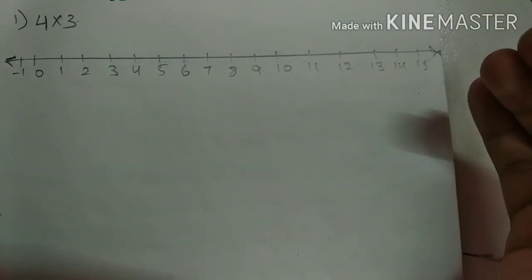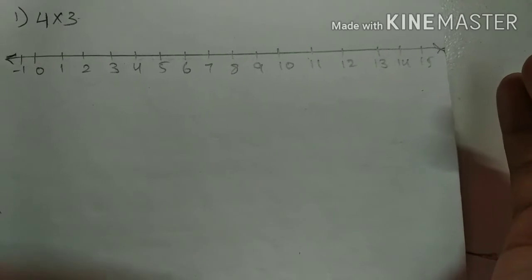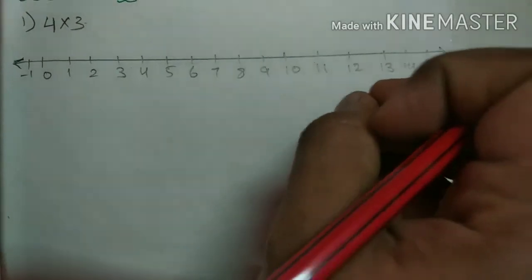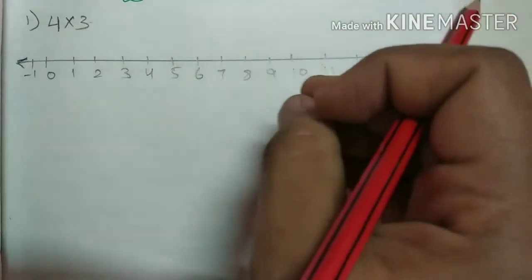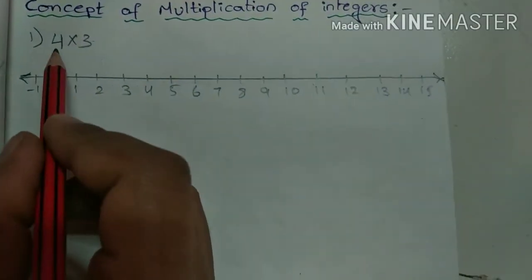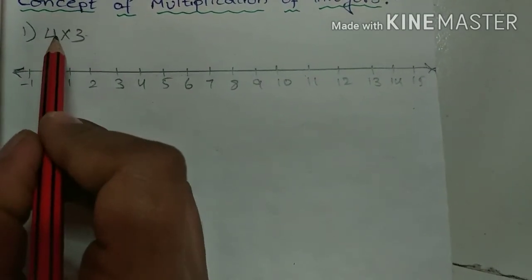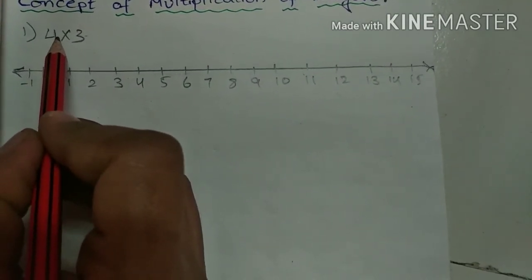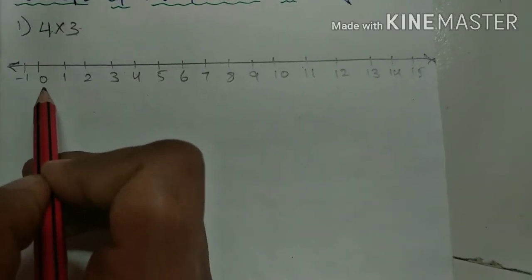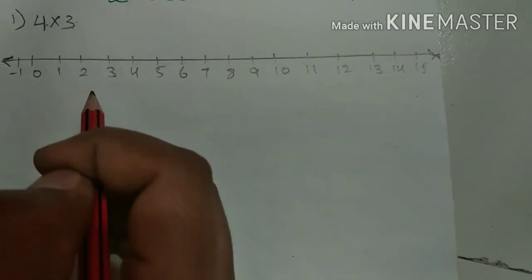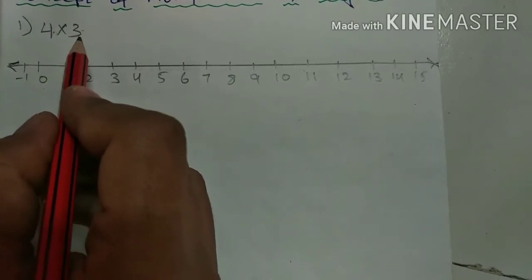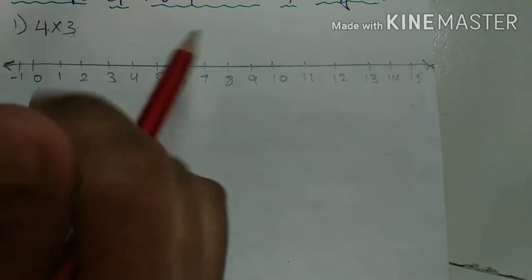You can write a few more integers beyond 12 as well, just make sure they're spaced conveniently — don't write them too small. Now, how to represent 4 into 3: the first representation is jumps. We make four jumps, each of three steps, from zero towards the right of the number line.